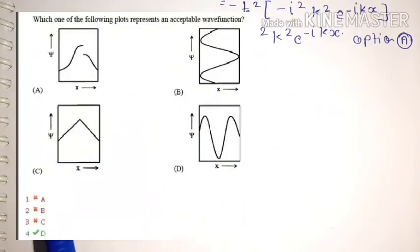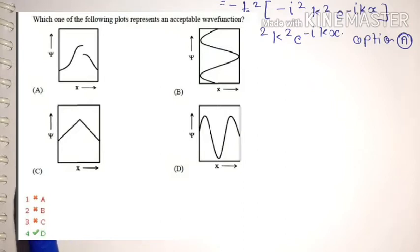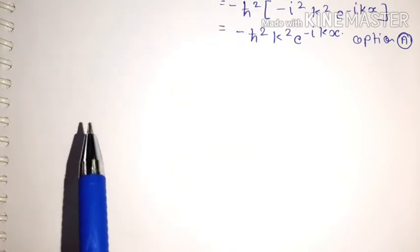The next question says: which one of the following represents an acceptable wave function? You are given four plots, and you need to find which one represents an acceptable wave function.